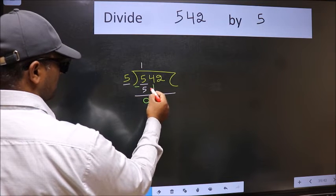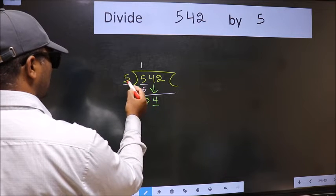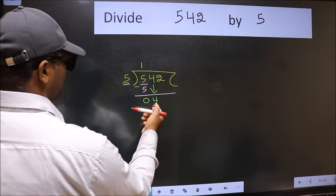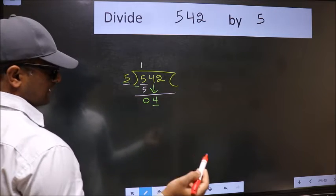After this, bring down the beside number. So, 4 down. Now, here we have 4 and here 5. 4 is smaller than 5. So, we should bring down the second number.